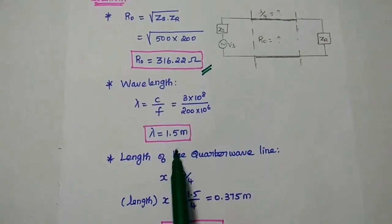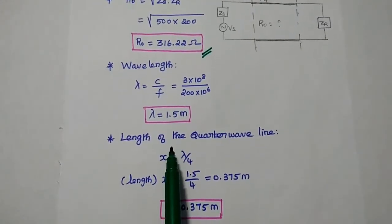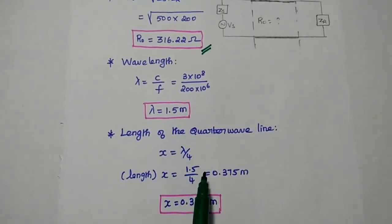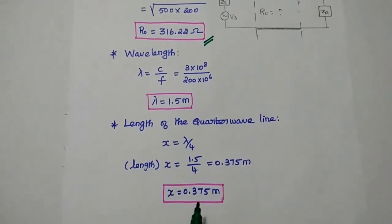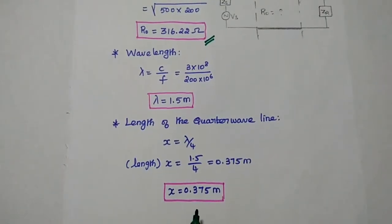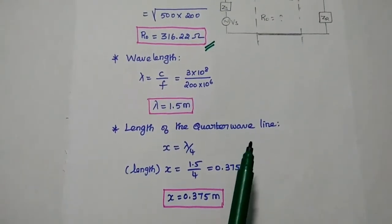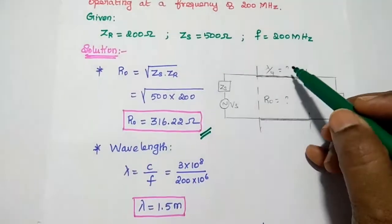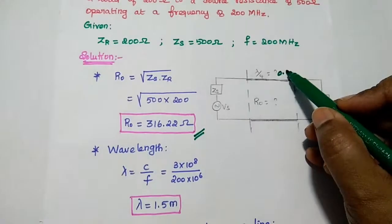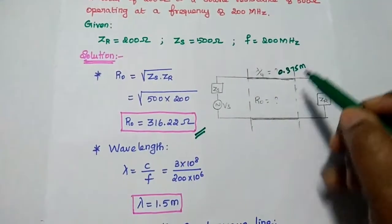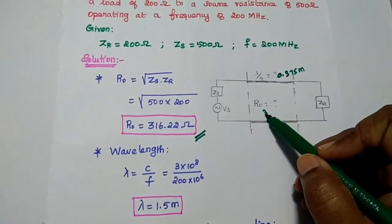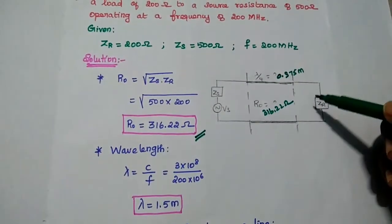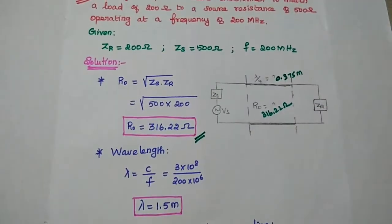From this lambda, we can get the length of the quarter wave line X. X is equal to lambda by 4. Lambda is 1.5, so we get the length of the quarter wave line as 0.375 meter. So now we have designed the quarter wave line: lambda by 4 is equal to 0.375 meter, and its characteristic impedance value is 316.22 ohm. This is the design of the quarter wave transformer for the given values.